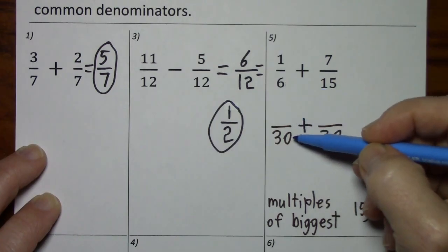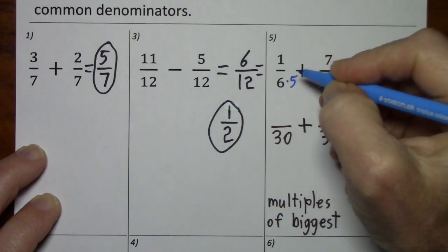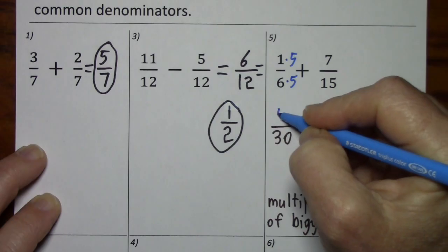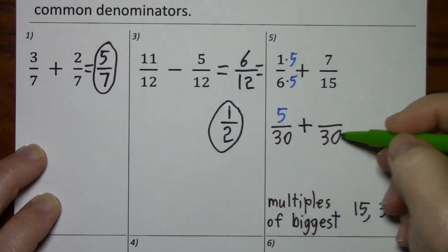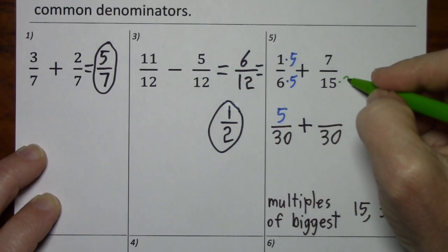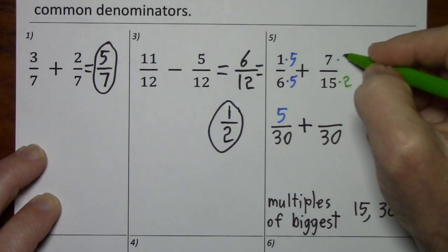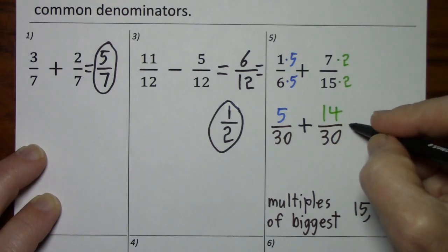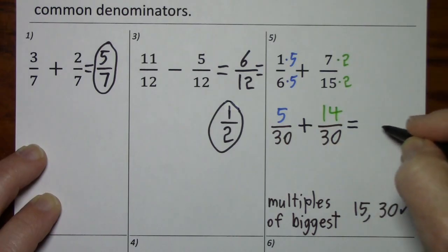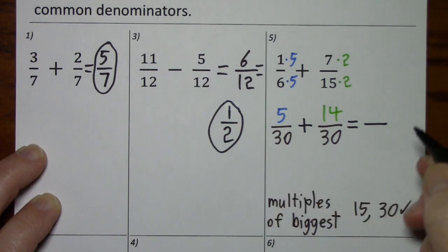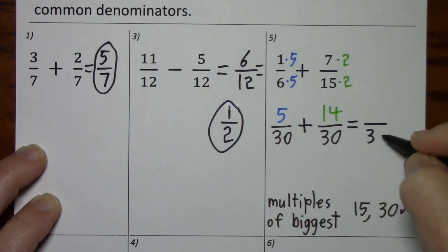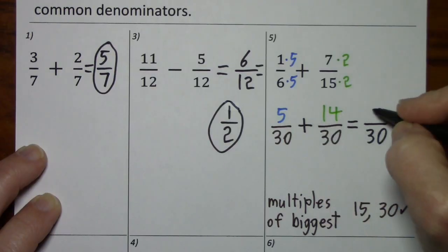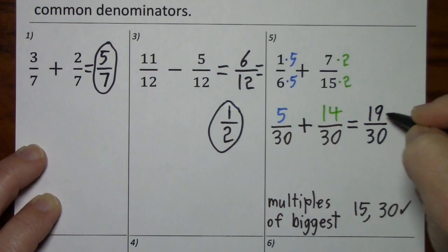To get from 6 to 30, multiply by 5. Always do the same to the numerator. To get from 15 to 30, we'll multiply by 2, and the same to the numerator. We went through all the trouble of getting a common denominator because we keep the common denominator. And then 5 and 14 is 19.